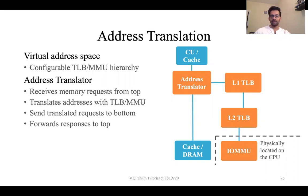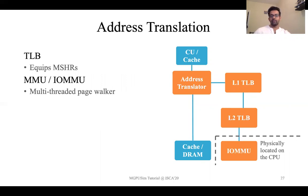In case of an L2 TLB miss, the request is forwarded to the IMMU. The IMMU is physically located on the CPU side and handles the page table walks resulting from L2 TLB misses. Once the translation is complete via the page table walk, the translation response is returned to the L2 TLB, which then returns it back to the upper levels of the memory hierarchy.